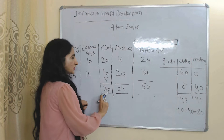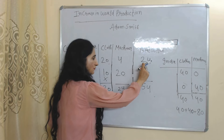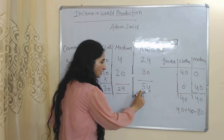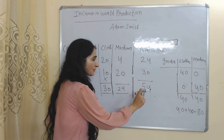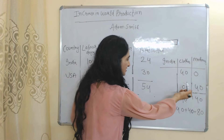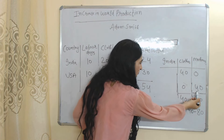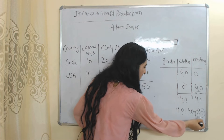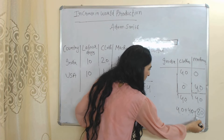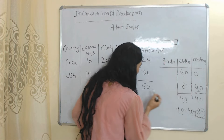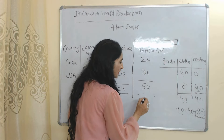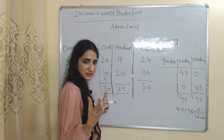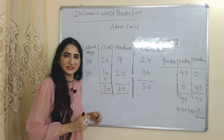As a result, production of machines increases from 20 units to 40 units. Before international trade, production of machines is 24 and production of cloth is 30 — 24 plus 30 equals 54, so total world production before international trade is 54. After international trade, production of cloth is 40 and production of machines is 40 — 40 plus 40 equals 80. So total world production after international trade is 80 compared to 54 before. This increase in total production because of international trade is called gain through international trade.